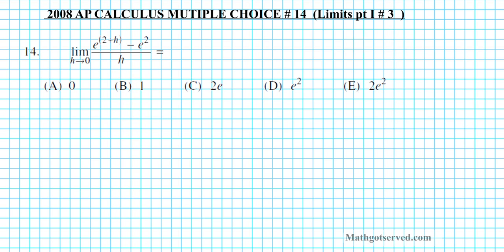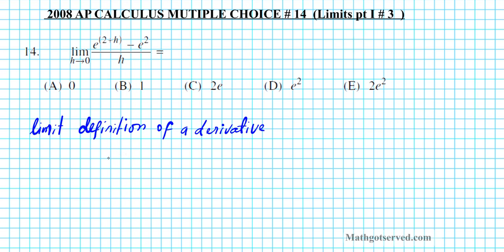Before we interpret or translate this into a much more manageable format, let's go over what the limit definition of a derivative is. Let's go ahead and write that down. The limit definition of a derivative: if you want to find f prime of x and express it as a limit, this is the limit as h approaches zero of f of x plus h minus f of x divided by h.